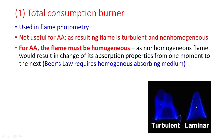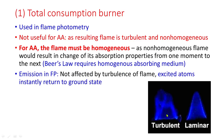For atomic absorption, the flame must be homogeneous, as a non-homogeneous flame results in changing absorption properties from one moment to the next. This negates the applicability of Beer's law to atomic absorption. Emission in flame photometry, however, is not affected by turbulence, as excited atoms instantly return to the ground state.